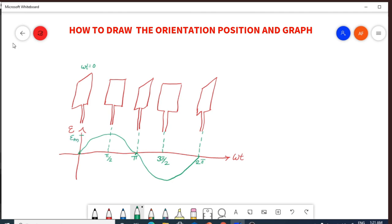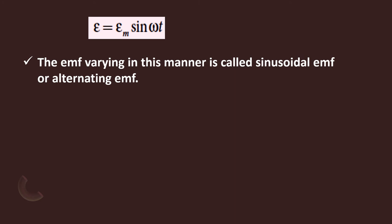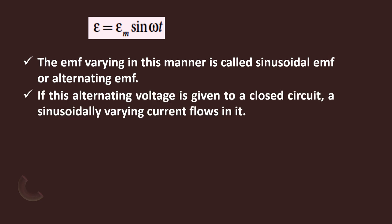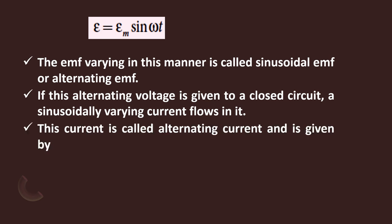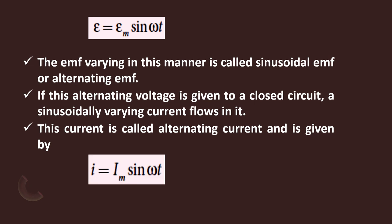The maximum value is epsilon_m, so epsilon = epsilon_m·sin(omega·t). The EMF varying in this manner is called sinusoidal EMF, or alternating EMF. In a closed circuit, if an alternating voltage is given, a sinusoidal current will flow — this is called alternating current, and its value is written as i = i_m·sin(omega·t).